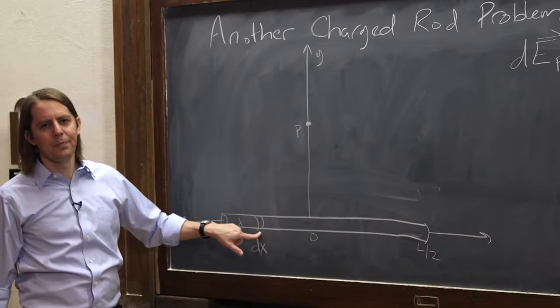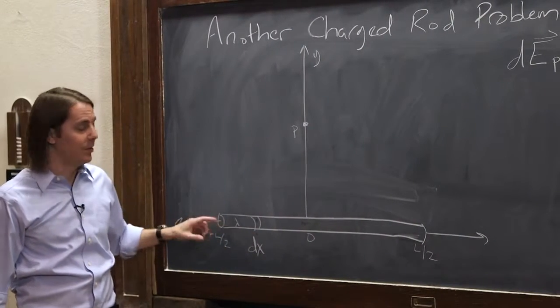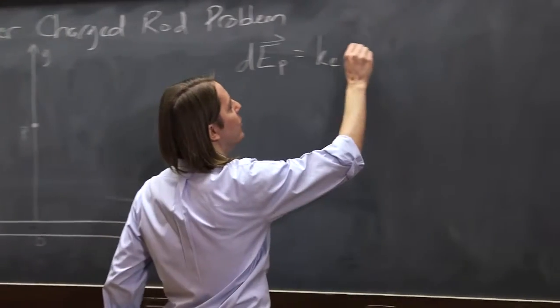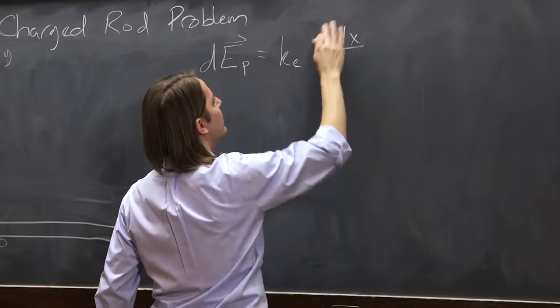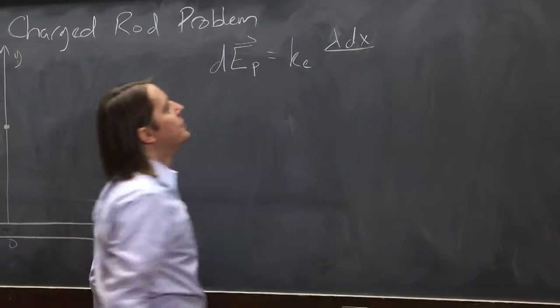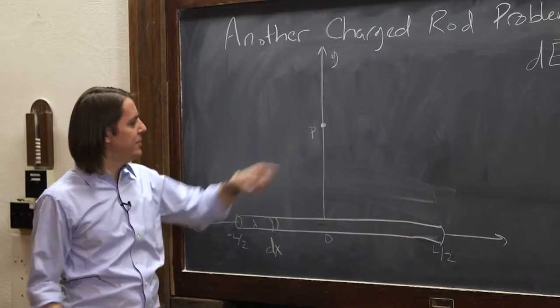The charge is dq, but from the last problem you know we can write the charge as lambda dx. It's just the charge per unit length times the length of the element. So I'll go ahead and write lambda dx here.